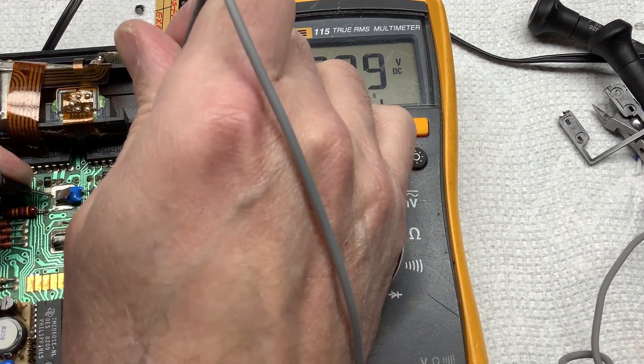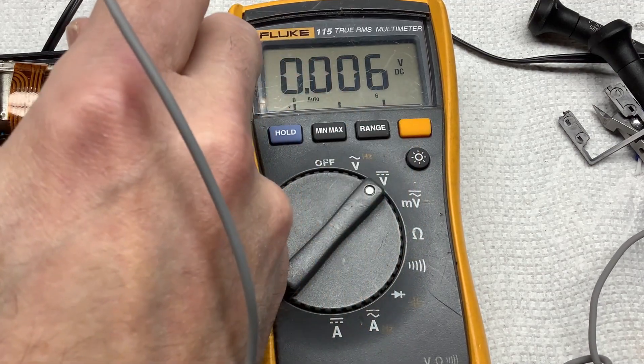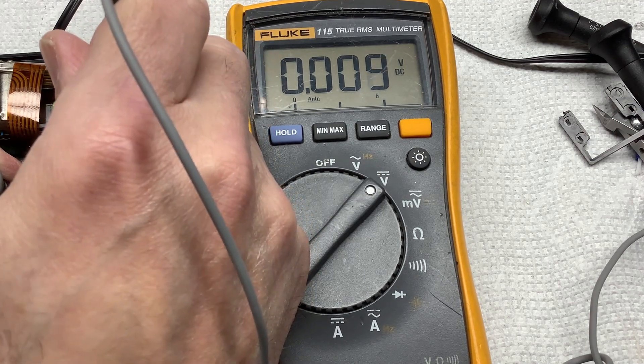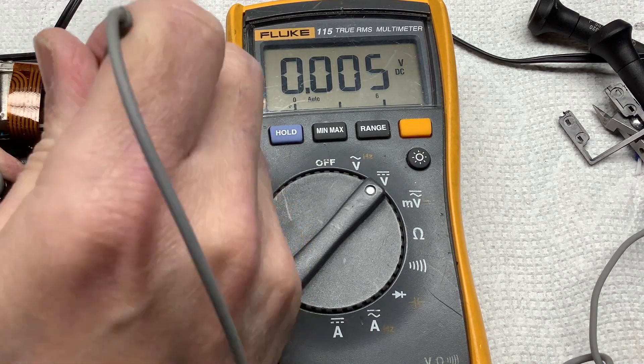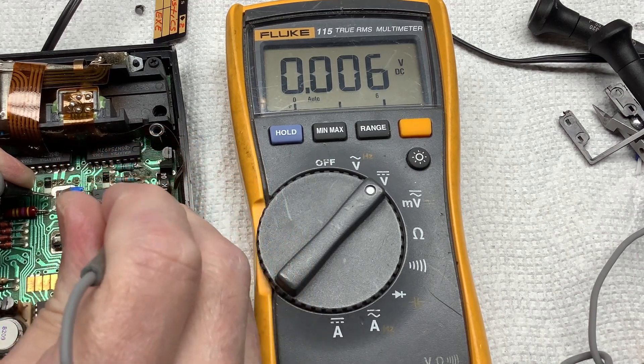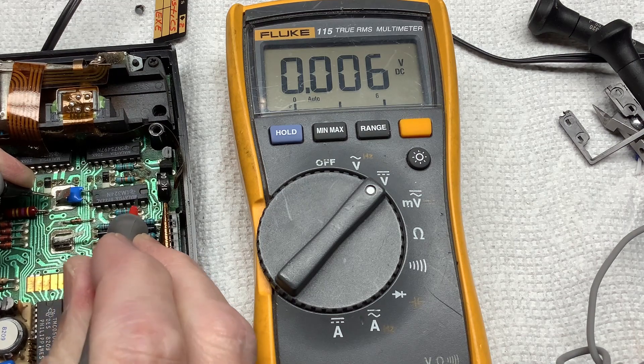So for example if we look at this one you can see that's very little. Look at this one very little. We look at this one very little. Sorry I should be showing this.